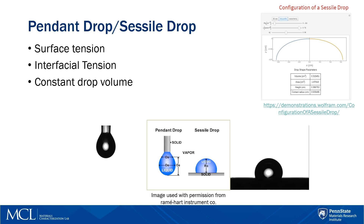That can be very helpful. The software that controls the instrument is also used to analyze the data, using image processing algorithms to return the results. Other software, such as ImageJ, could also be used to extract the shape of the drop, and in the case of the sessile drop, utilities such as Wolfram's configuration of a sessile drop can be used to fit the data. Using a careful combination of these techniques, we're able to estimate the surface tension of our liquids, which can then be used to estimate the surface energy of our solid.